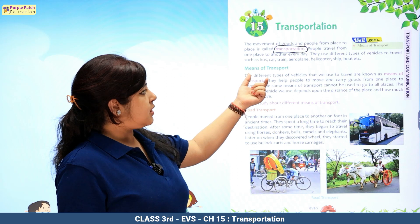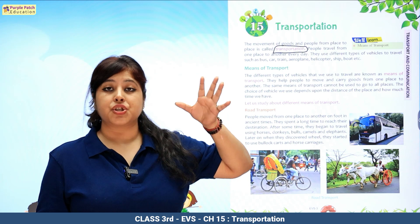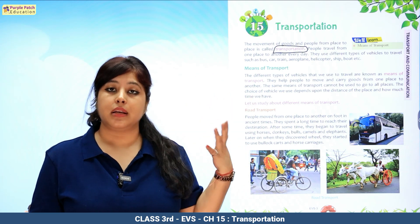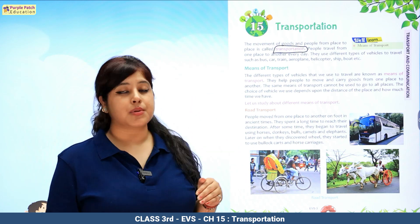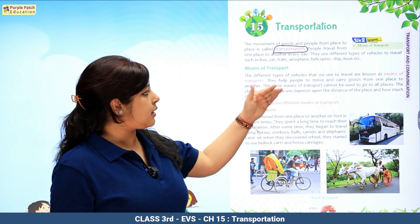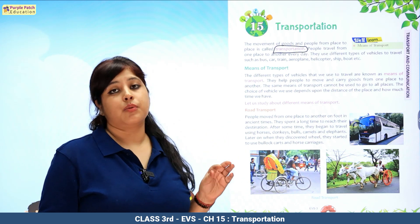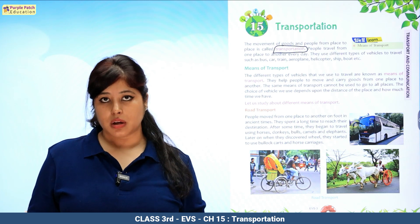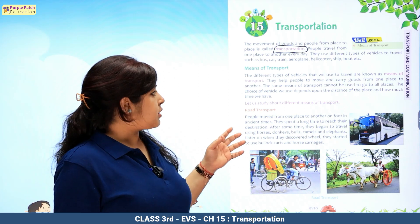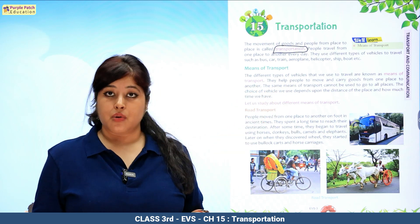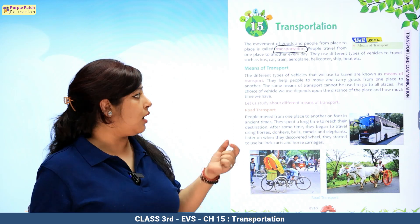People travel every day — we see different vehicles like bus, car, train, aeroplane, ship, boat, helicopter. These are some transports that we see. The different types of vehicles that we use for travel are known as means of transport. Alag-alag tariki ki vehicles jo hum use karte hai, woh hote hai humare means of transport. They help people to move and carry goods from one place to another.